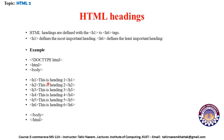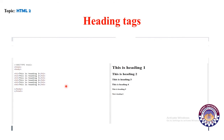As you can see in the program, there are six headings from h1 up to h6. I have written the program in Notepad, saved it as an HTML file, and run it in the web browser. Look at this: heading one is the biggest, then heading two, heading three, heading four, heading five, and heading six.